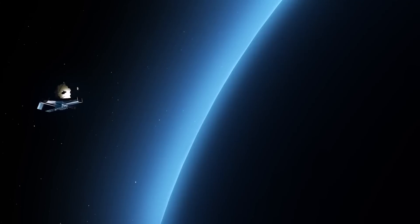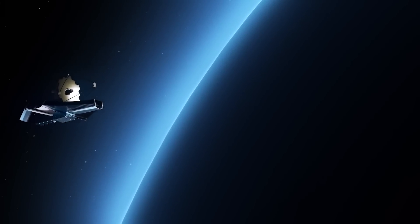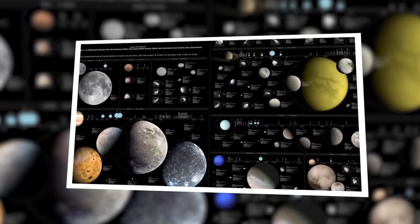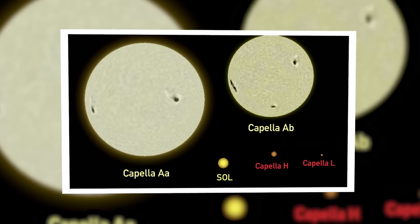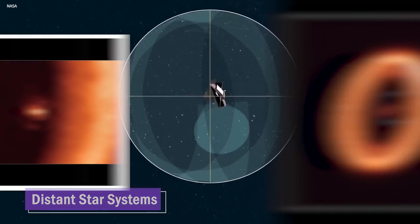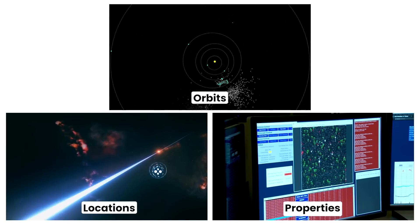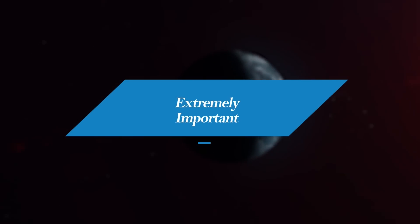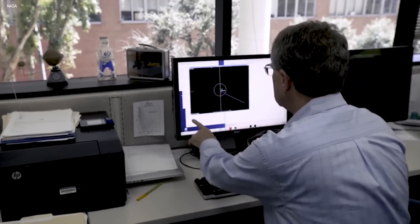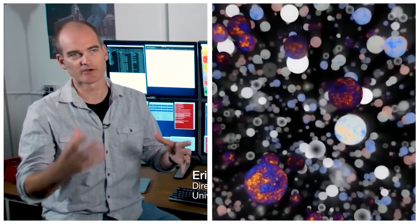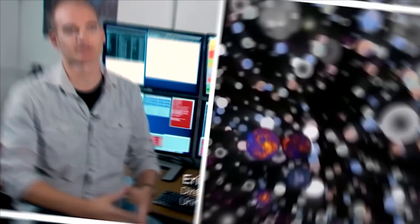Beyond our own solar system, the telescope's detection holds implications for understanding the formation and evolution of other solar systems in the universe. With that knowledge in hand, scientists can draw parallels and make comparisons to objects observed in distant star systems. The detection of these objects also contributes to our understanding of the distribution of matter in the universe. Examining the orbits, locations, and properties of these newfound objects within our solar system is extremely important, so astronomers can refine existing models and theories regarding the large-scale structure of the cosmos. These observations offer valuable insights into how matter is distributed on a cosmic scale, helping to further our understanding of the universe's composition and organization.